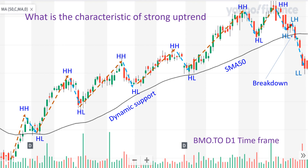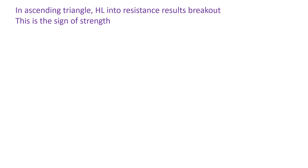There are some other methods to find the strength of the trend, and I will show you in the next few slides. You know that the strength of the trend is very important for you to enter the market. In ascending triangle, higher low into resistance results in breakout, and this is a sign of strength. In a strong price trend, we have to look for breakout, breakdown, or reversal. That's how traders enter or exit the market and make profit from the stock market.